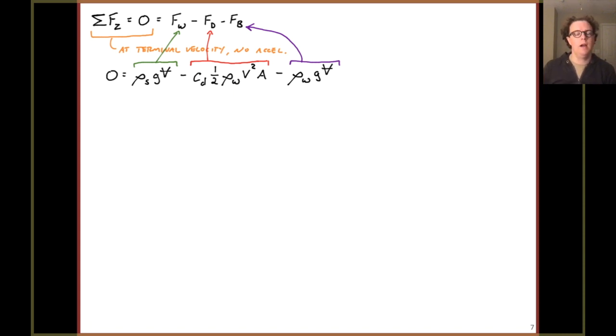The second term highlighted in red, that's our drag force, the same equation I wrote on the very first slide of this lecture. And then the final term with the purple is the buoyant force. You'll remember that's the mass of fluid displaced. So we're using the density of water, rho w, in that right-handmost term.